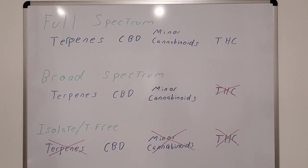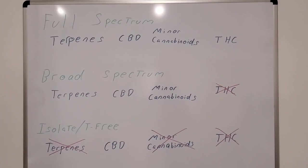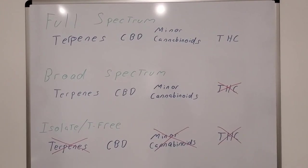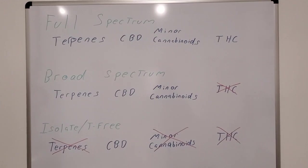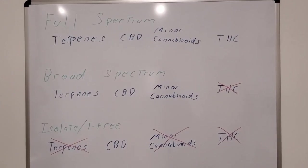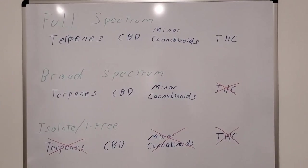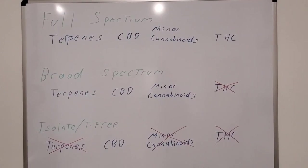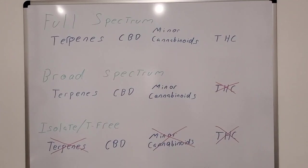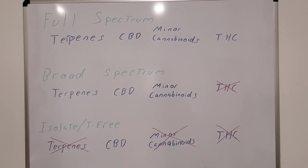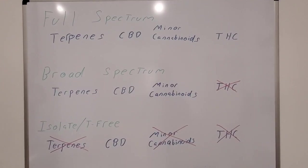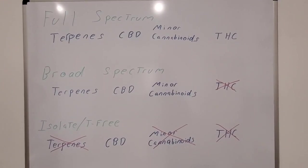And we're wrapping up this session by talking about the difference between full spectrum, broad spectrum, and tea free or isolate oils. So full spectrum has terpenes, CBD, minor cannabinoids, and a small amount of THC. What I'm making right now is full spectrum stuff. Broad spectrum includes terpenes, CBD, and minor cannabinoids, but no THC.